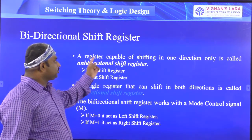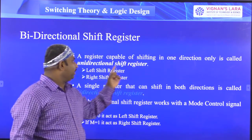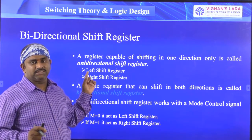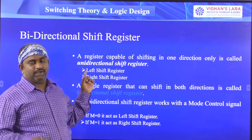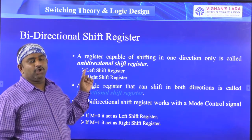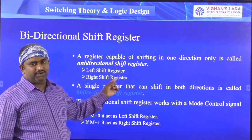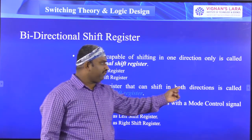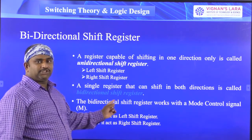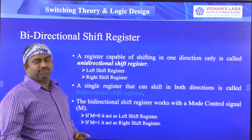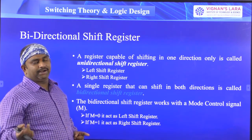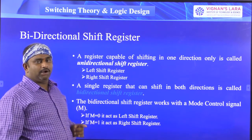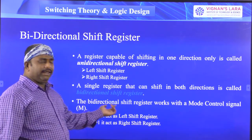A register capable of shifting in only one direction is called a unidirectional shift register. Whenever the shift register shifts data from left to right or right to left — any one operation — it is called a unidirectional shift register, like a left shift register or a right shift register. A single register that can shift in both directions is called a bidirectional shift register.